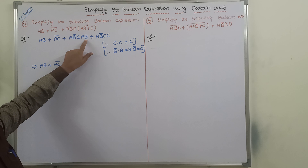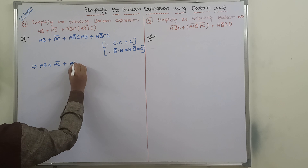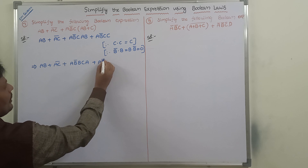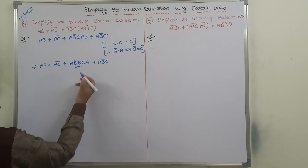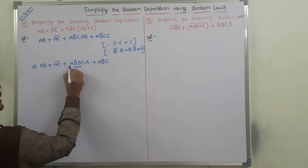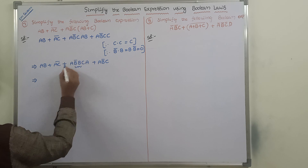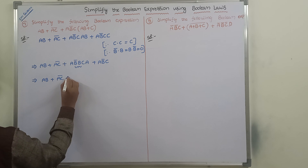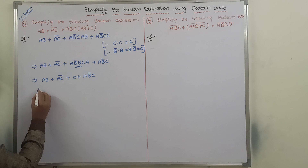B̄ into B is nothing but zero, so zero into the remaining terms gives zero. That entire first product term becomes zero. Similarly, C·C becomes C. So we are left with (AB + AC) whole bar plus zero plus A·B̄·C.